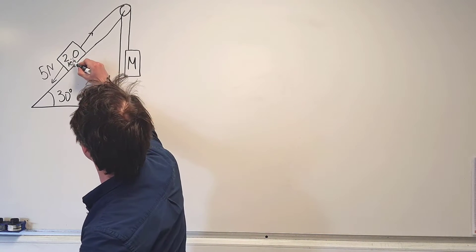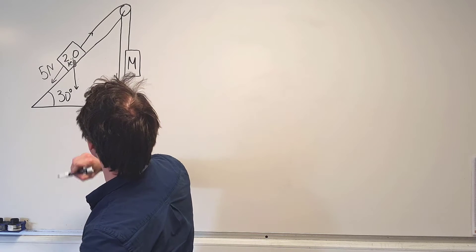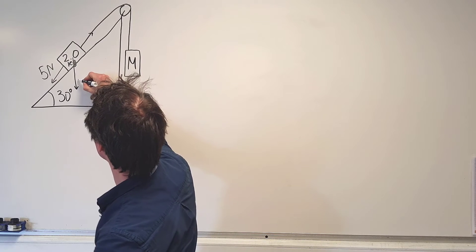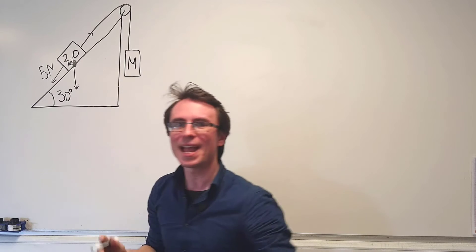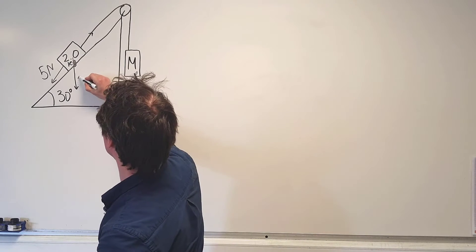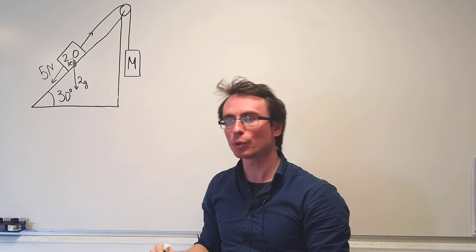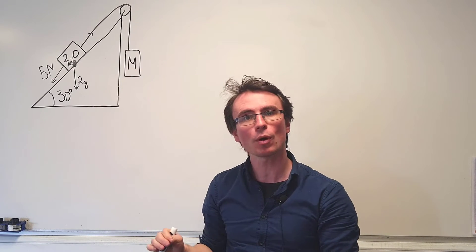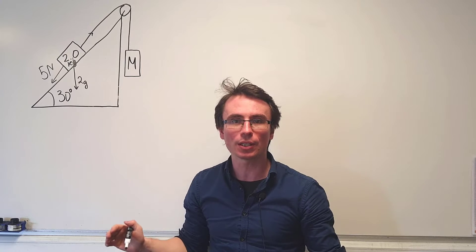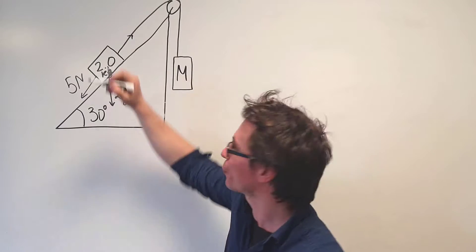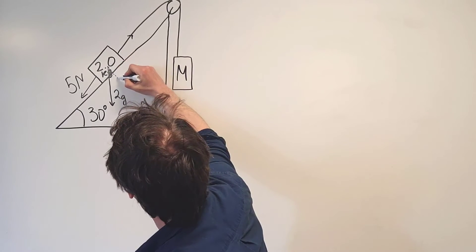First of all we're going to have the weight which is acting pretty much straight downward. So this here is the weight which is just going to be mg, which is just 2g. Now this weight is going to have a component which will be parallel to the slope and also a component which is perpendicular to the slope. And we can resolve these vectors like so.